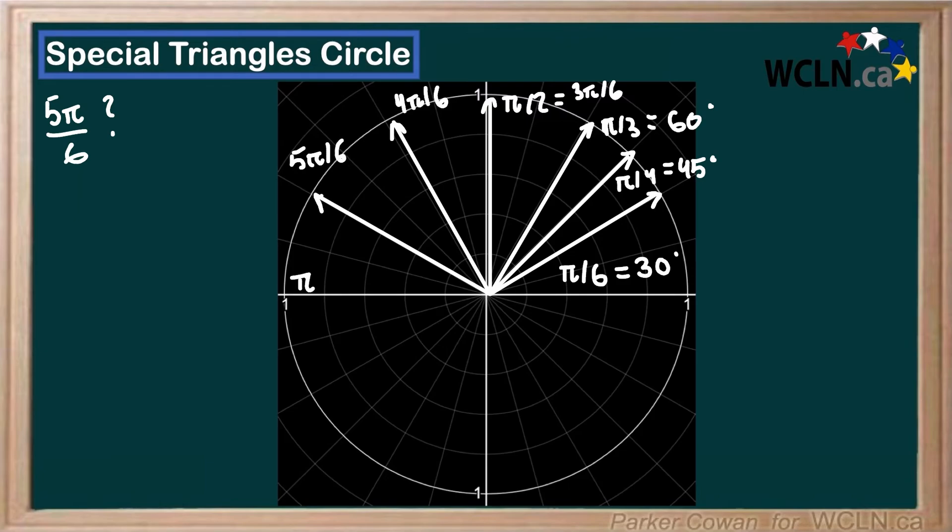So there we have it. We've found 5 pi over 6. Now we can erase all these lines we drew to help things get a little less cluttered. Now we can do the same thing with pi over 4.